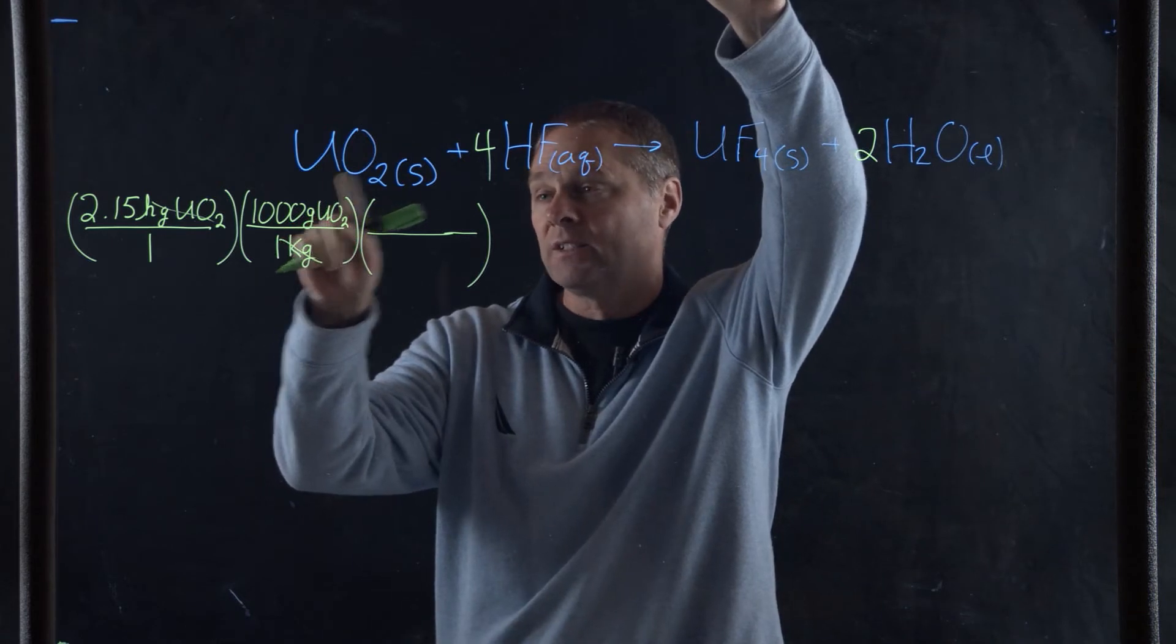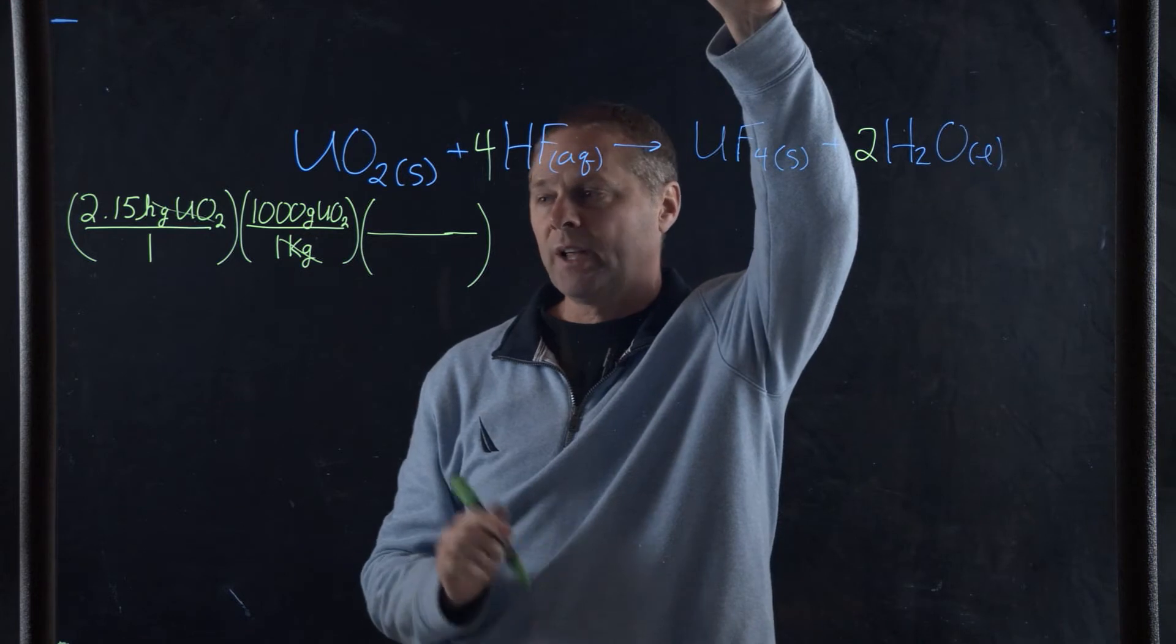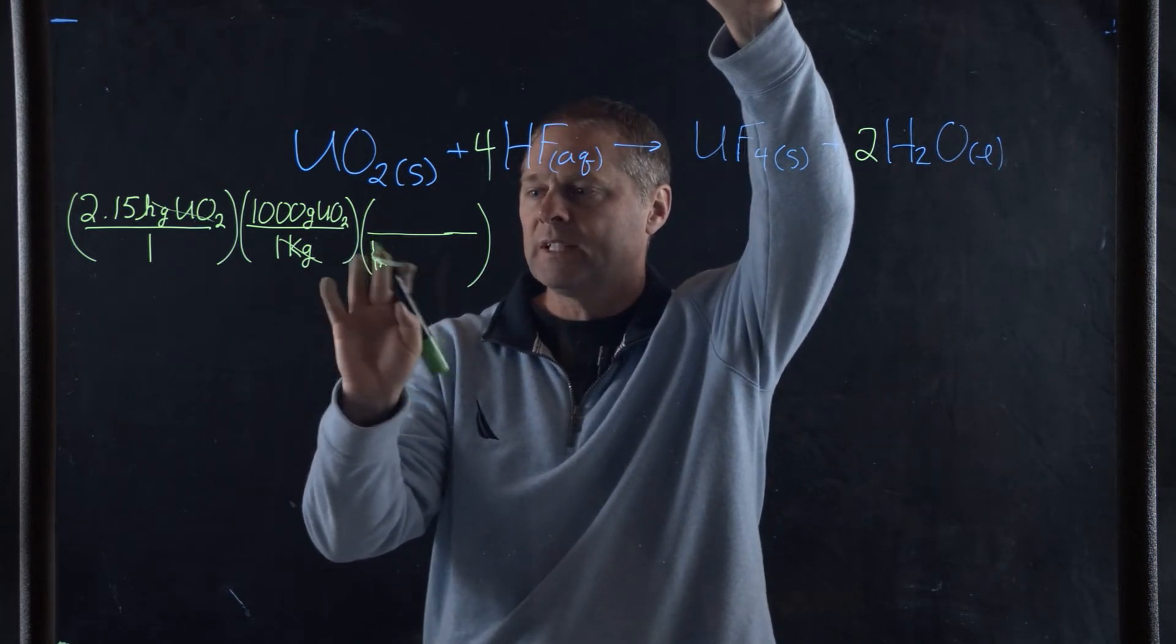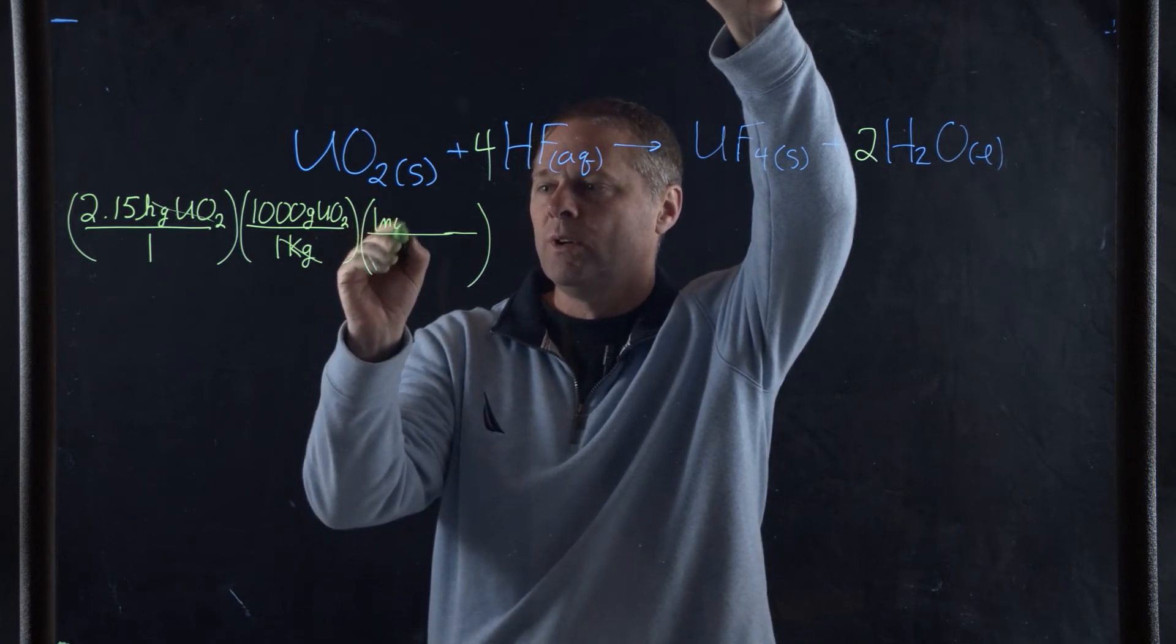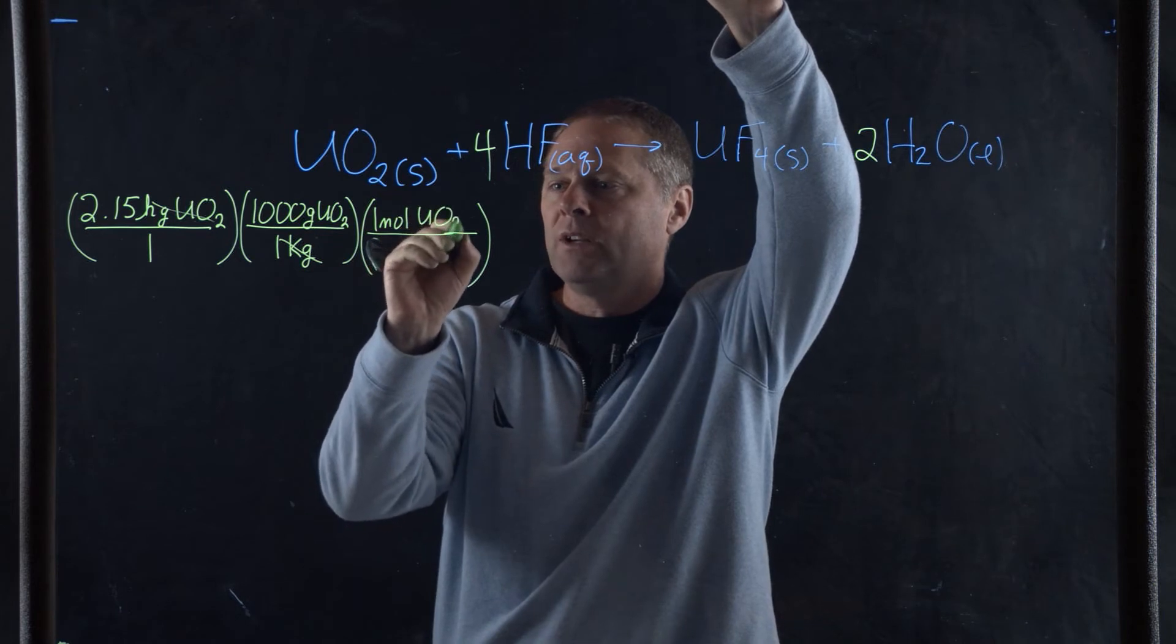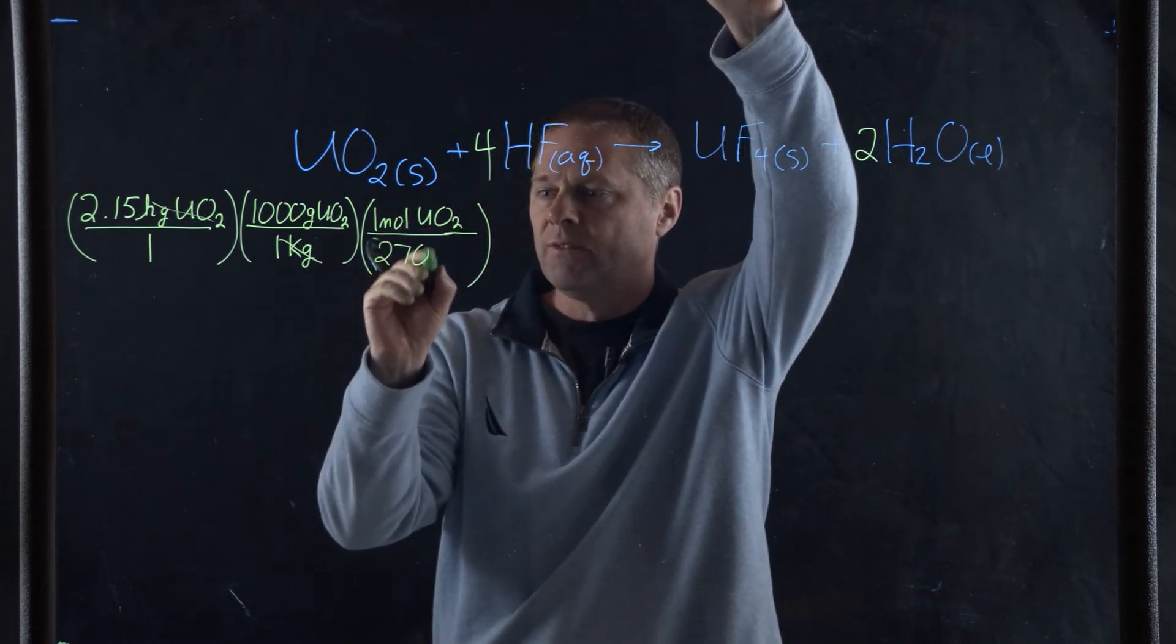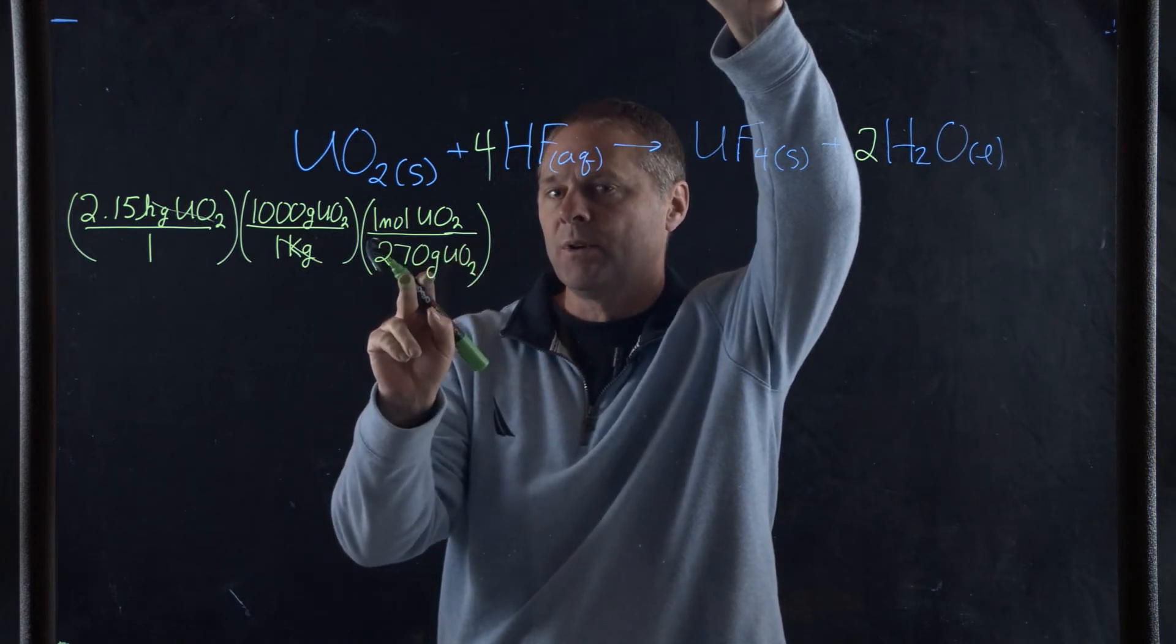We're in grams right now, so we have to convert this into moles. One mole of uranium oxide is equivalent to 270 grams of uranium oxide - I got this number from the periodic table. So our grams of uranium oxide cancel and now we can use our mole ratio.